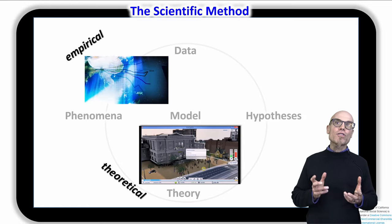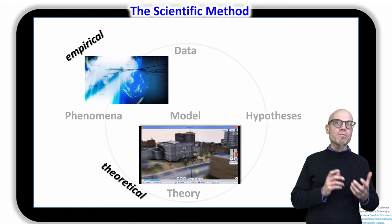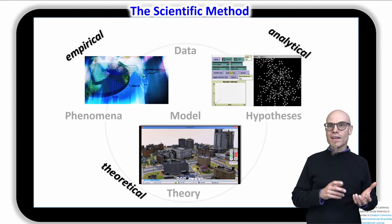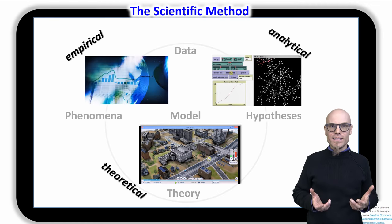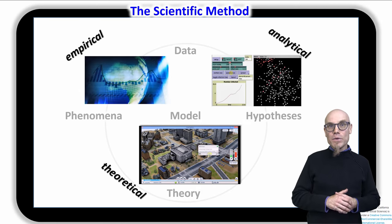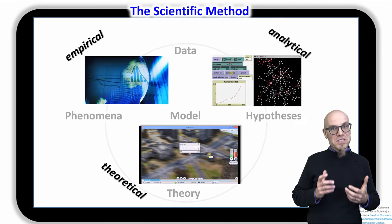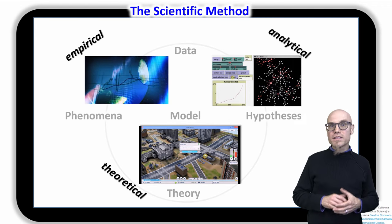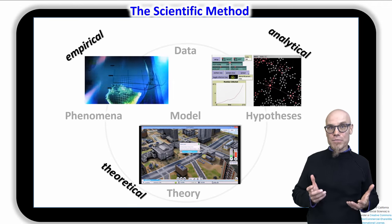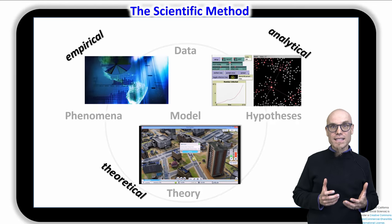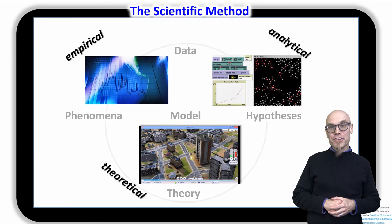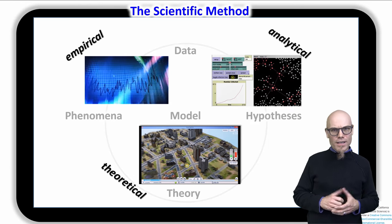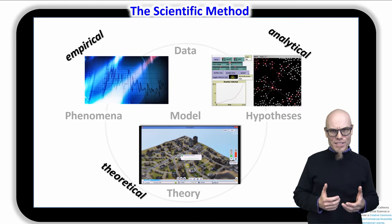And of course, in between the empirical and the theoretical is the analytical. Here we will analyze social networks — the structural fabric of our societies — and get help from artificial intelligence in order to make sense of it all.